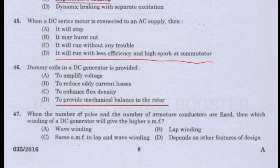Question 47. When the number of poles and the number of armature conductors are fixed, then which winding of a DC generator will give the higher EMF? Option A - Wave winding. Option B - Lap winding. Option C - Same EMF in lap and wave winding. Option D - Depends on other features of design. Answer is Option A: Wave winding.